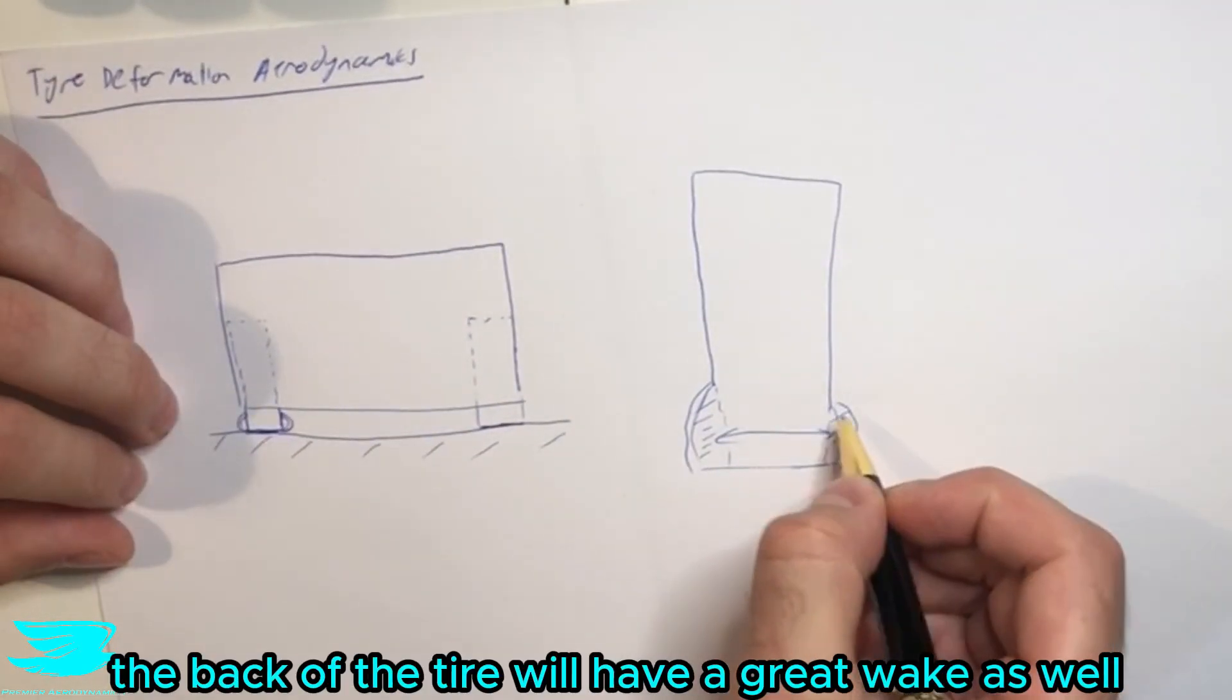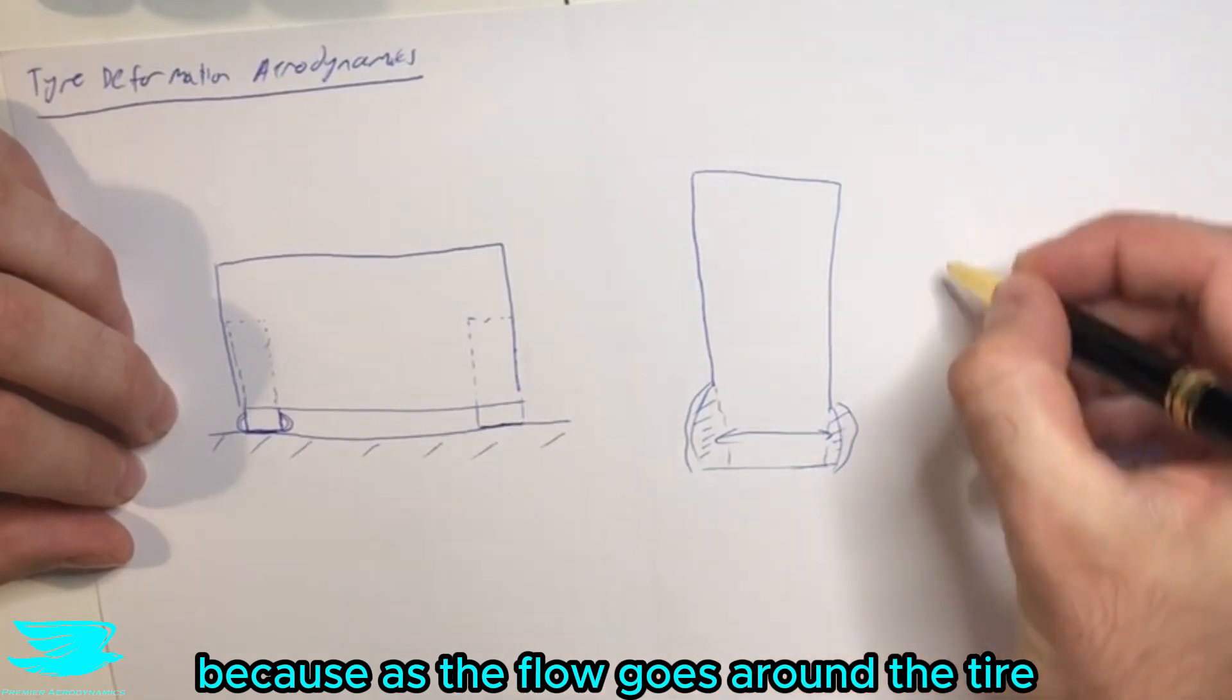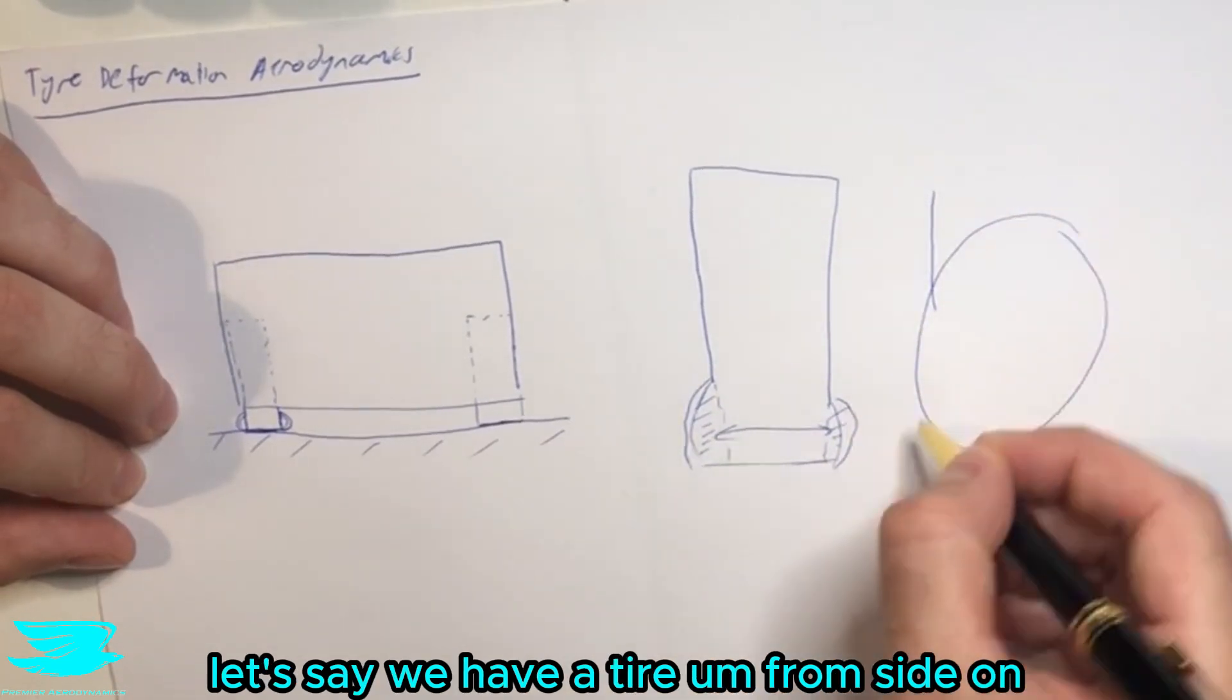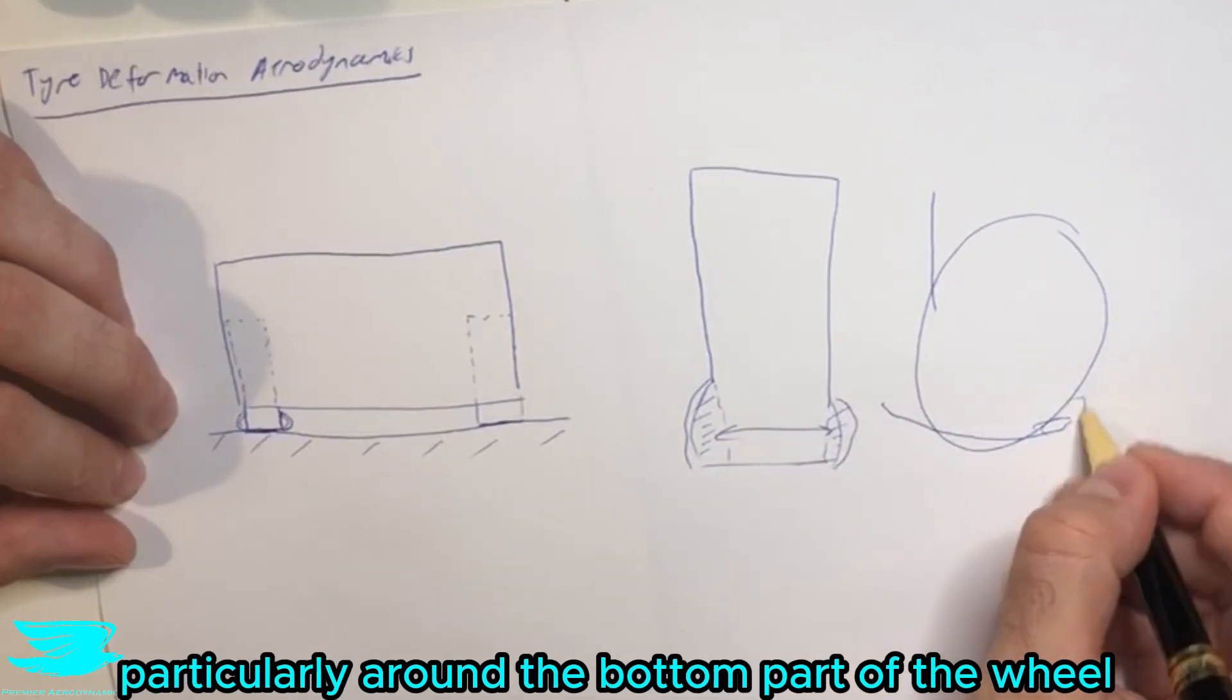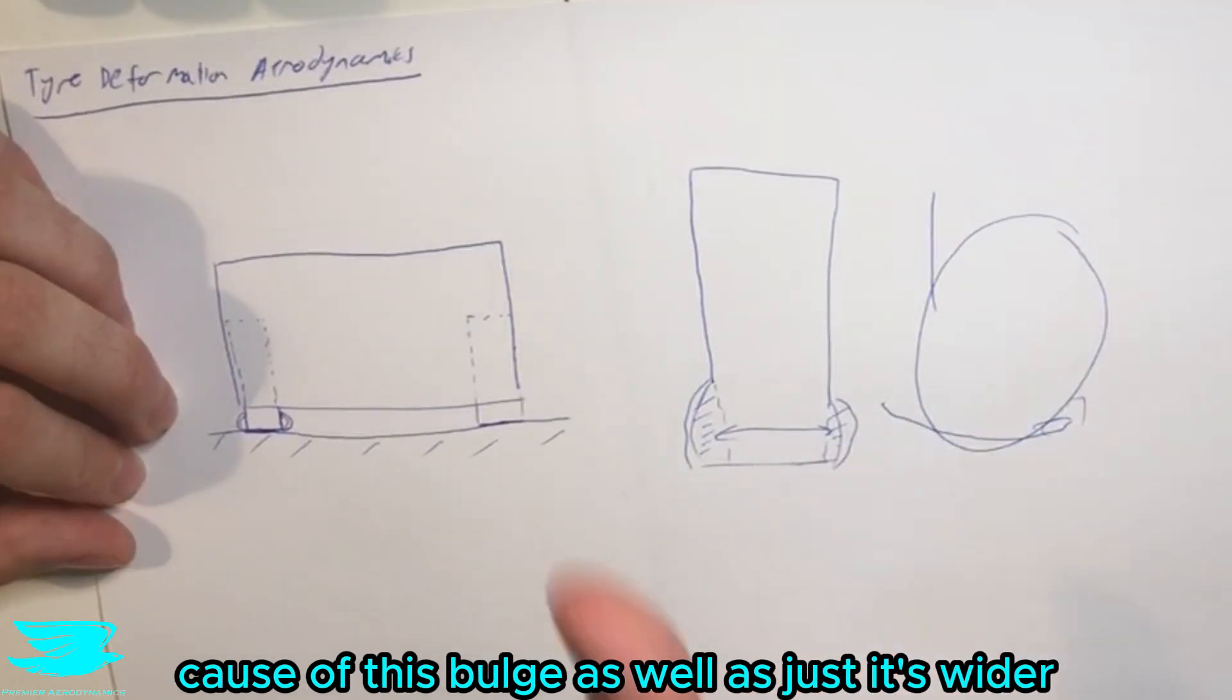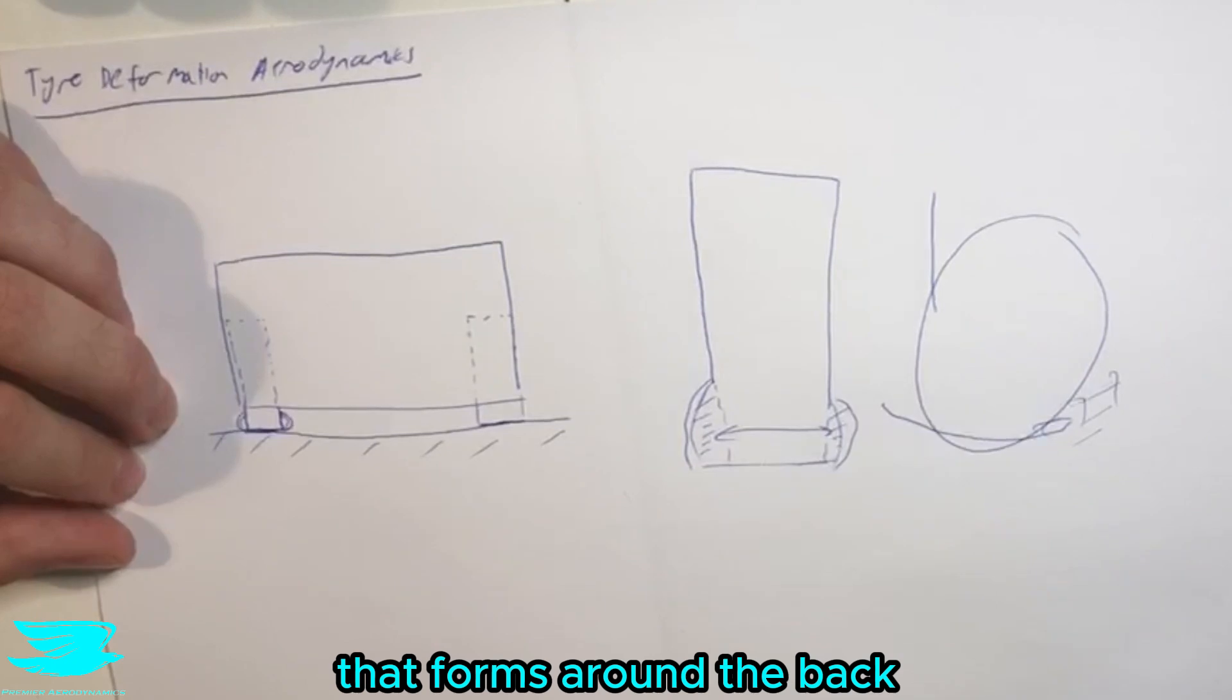Also, the back of the tire will have a greater wake as well, because as the flow goes around the tire—let's say we have a tire from side on—the flow comes around and we will usually get a wake forming, particularly around the bottom part of the wheel. So we get a bigger wake occurring here because of this bulge as well—it's just wider. So we get more drag from the wake that forms around the back.